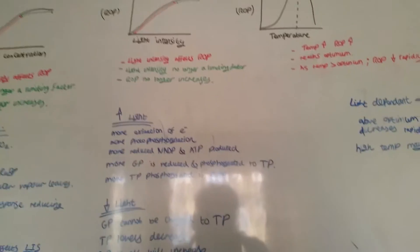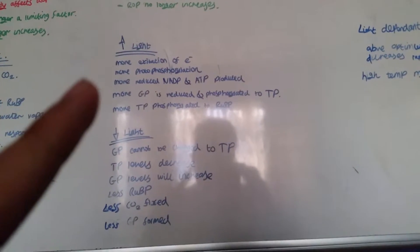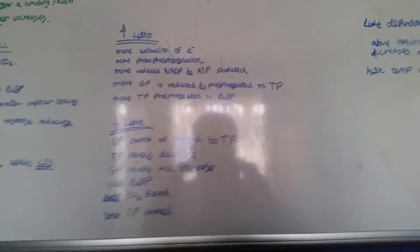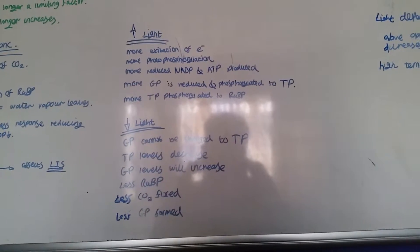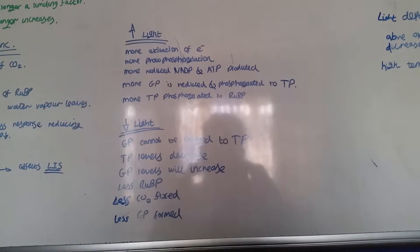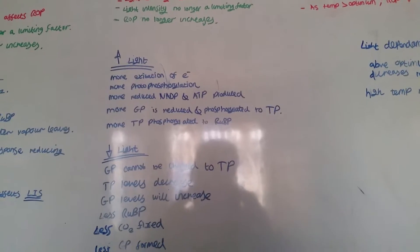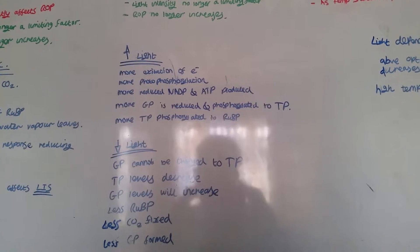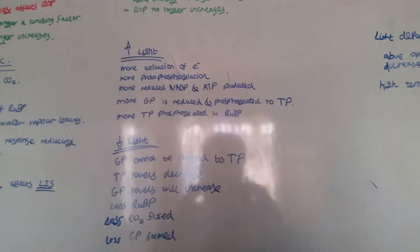Light intensity. So as there's more light intensity, there is more excitation of electrons. Hence, there is more photophosphorylation, more reduced NADP and ATP produced. There is also more GP, or more GP is reduced and phosphorylated to TP. More TP is phosphorylated to IUB.